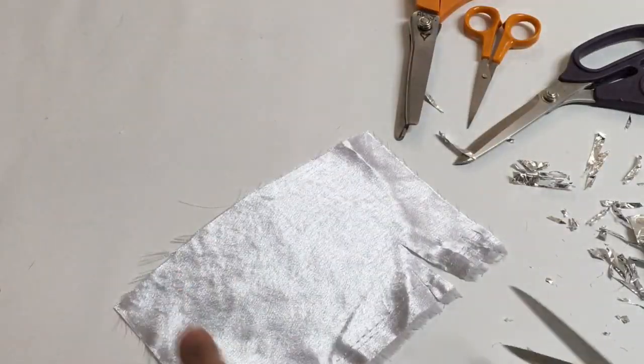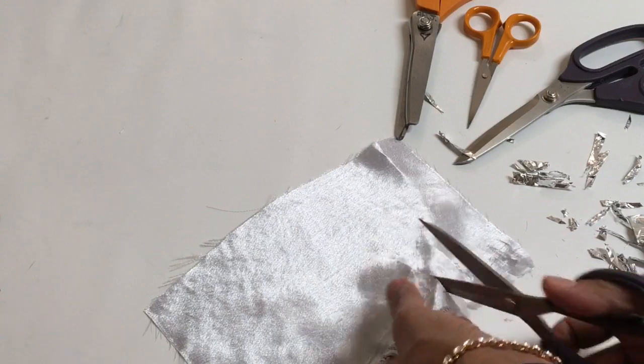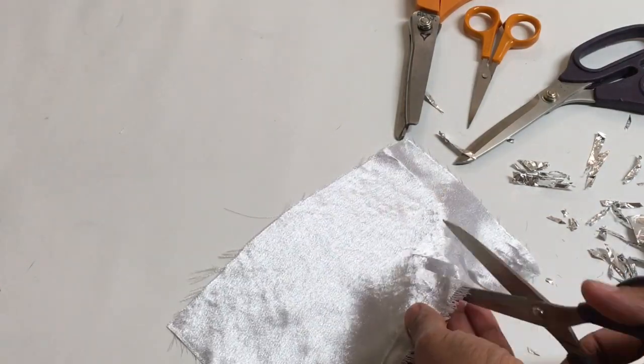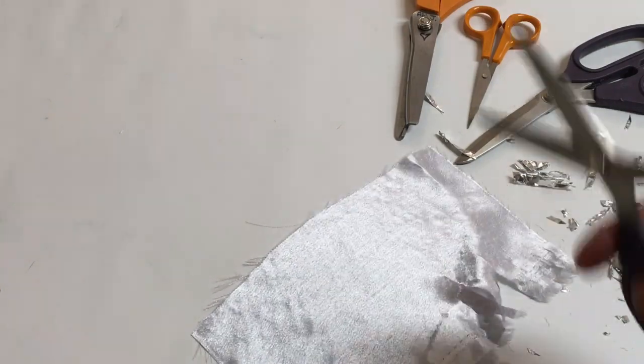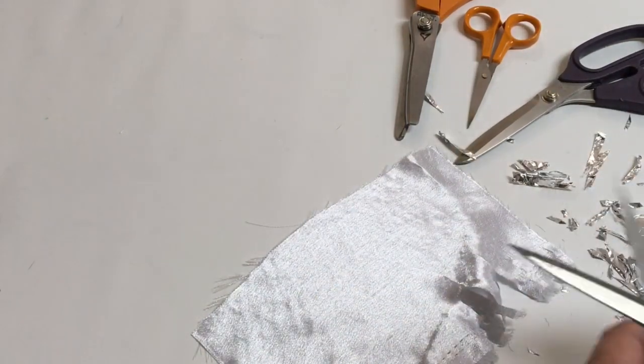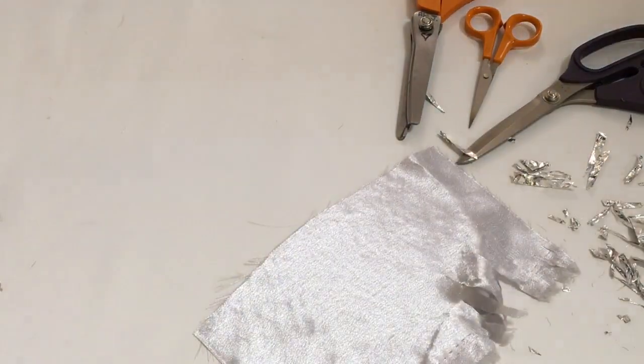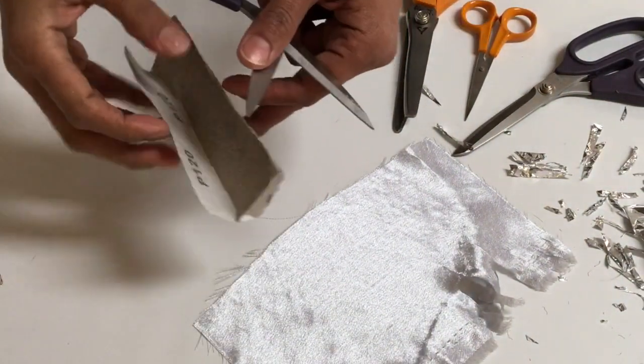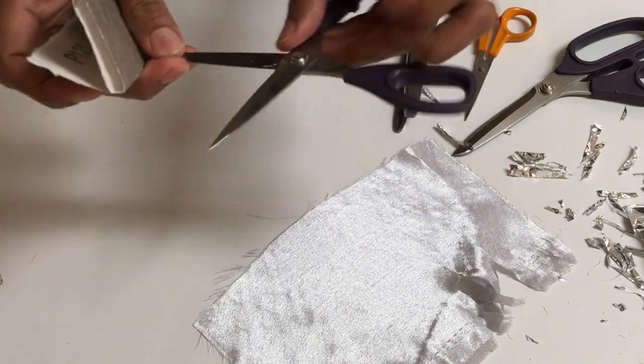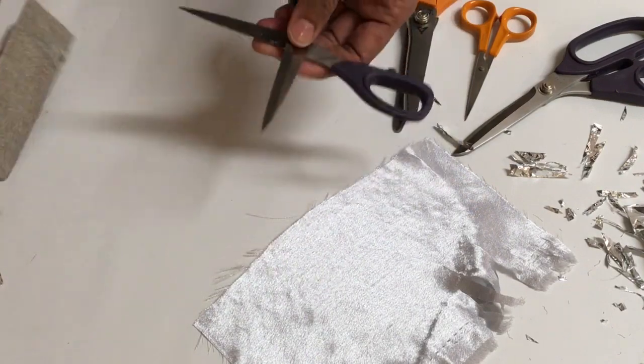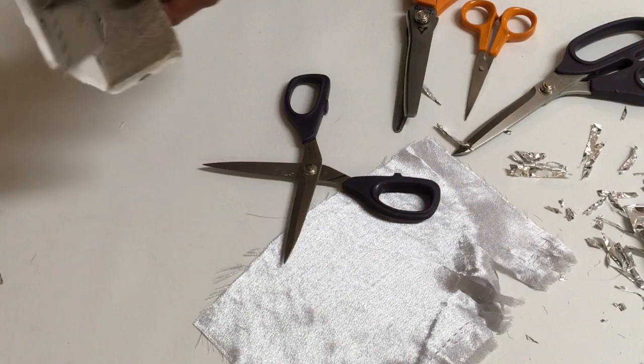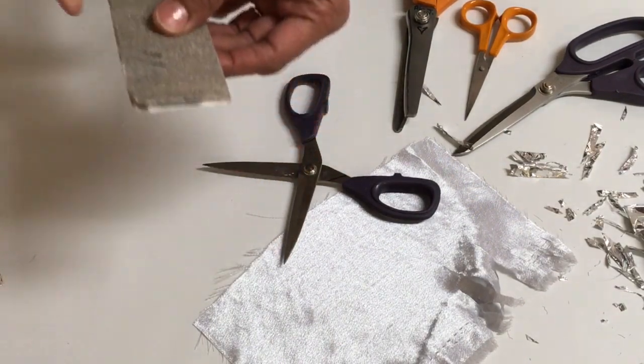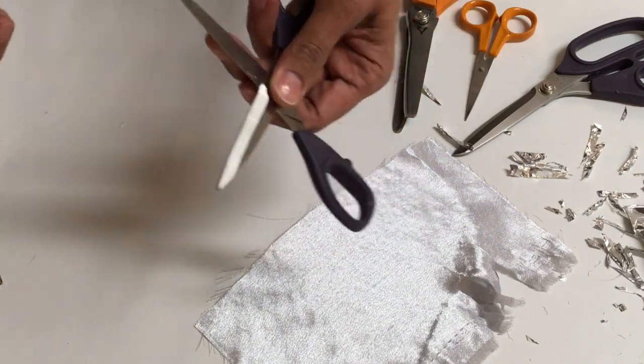Now occasionally you'll find that you've got a burr or a nick in your scissors, and that's why they won't cut. Get yourself some sandpaper—I have some 120 grit sandpaper here. What you want to do is wrap it around something quite sturdy.